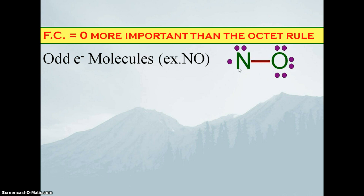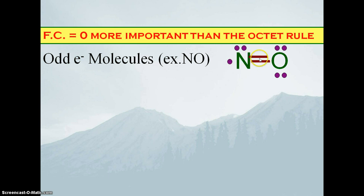Nitrogen is at five, wants to get to eight. We can't get it to eight because there's an odd number, but we can at least get it a little bit closer. So if we make a multiple bond — take away one of those lone pairs, make a double bond between the nitrogen and oxygen — now oxygen has a formal charge of zero. And if we look at the nitrogen, it starts with five valence electrons, and if we calculate the formal charge — one, two, three, four, five — we take half of each of the shared pairs plus all electrons owned solely by nitrogen, and the formal charge on this nitrogen is, in fact, zero. Formal charge equals zero is more important than the octet rule.